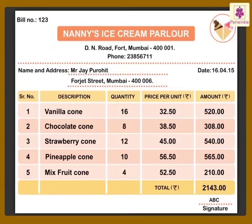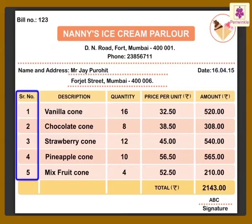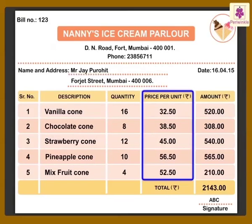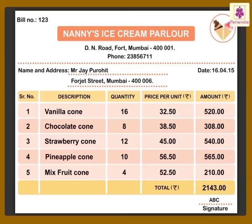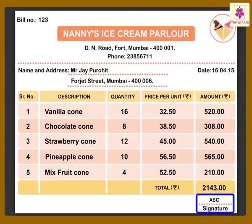Each bill has the name, address, telephone number, and bill number of the service provider shop; name and address of the customer; date on which the items are sold; serial numbers of the items; name and quantity of items sold; price per unit of the items sold; total cost of each item according to the quantity, that is, cost of each item multiplied by its quantity; and the total cost of all the items purchased.